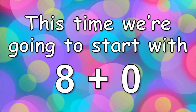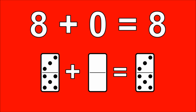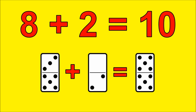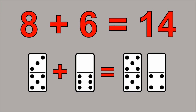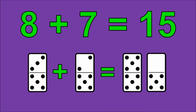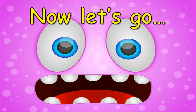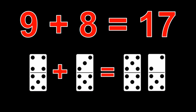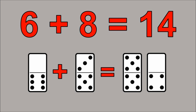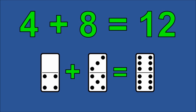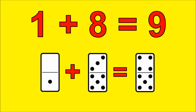Okay kids, this time we're going to start with eight plus zero, go all the way up to eight plus ten, and then come all the way back down. Ready? Let's go. Eight plus zero is eight. Eight plus one is nine. Eight plus two is ten. Eight plus three is eleven. Eight plus four is twelve. Eight plus five is thirteen. Eight plus six is fourteen. Eight plus seven is fifteen. Eight plus eight is sixteen. Eight plus nine is seventeen. Eight plus ten is eighteen. Now let's go all the way back down. Ten plus eight is eighteen. Nine plus eight is seventeen. Eight plus eight is sixteen. Seven plus eight is fifteen. Six plus eight is fourteen. Five plus eight is thirteen. Four plus eight is twelve. Three plus eight is eleven. Two plus eight is ten. One plus eight is nine. Zero plus eight is eight.